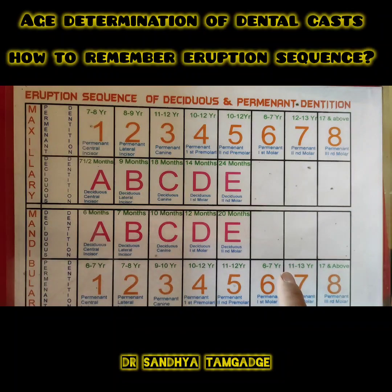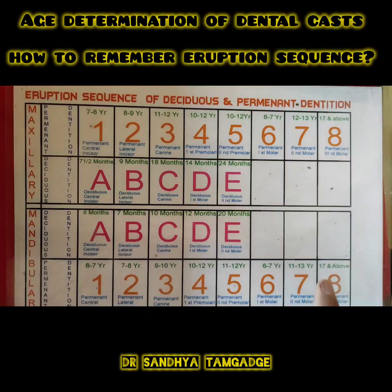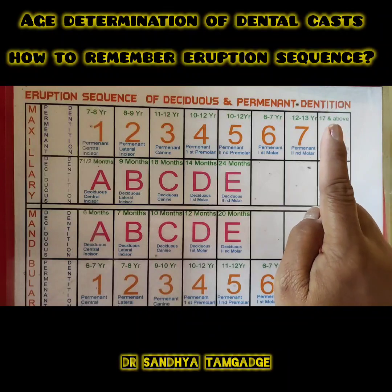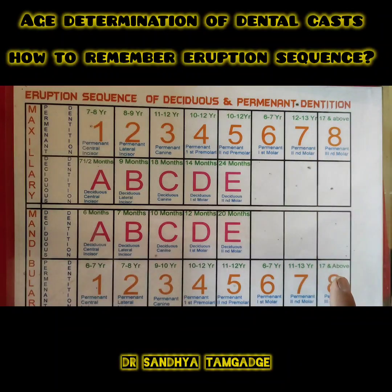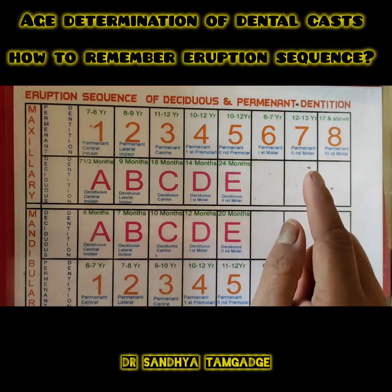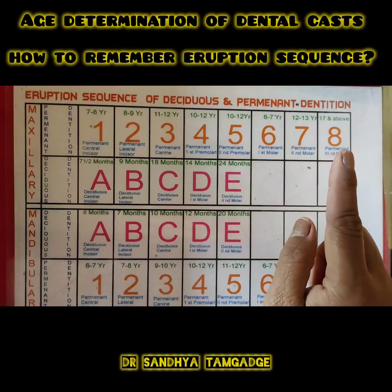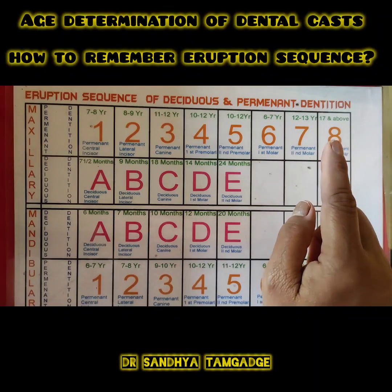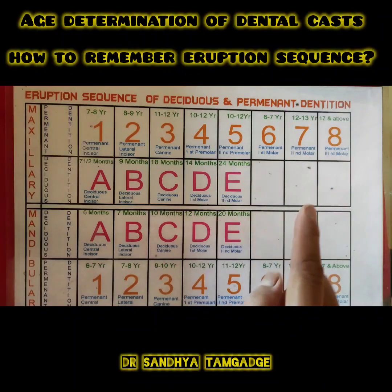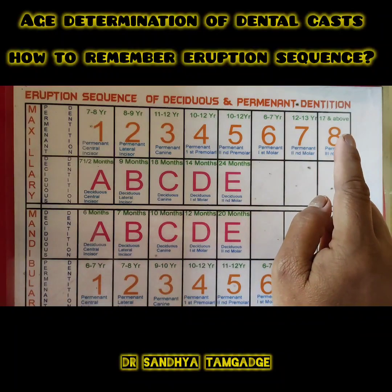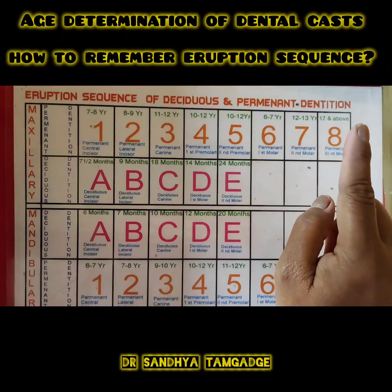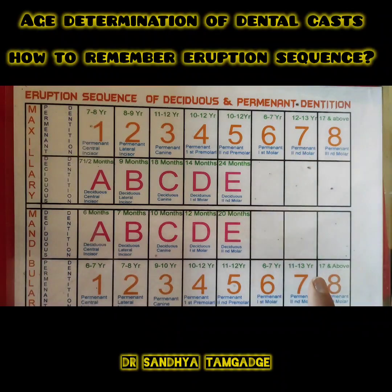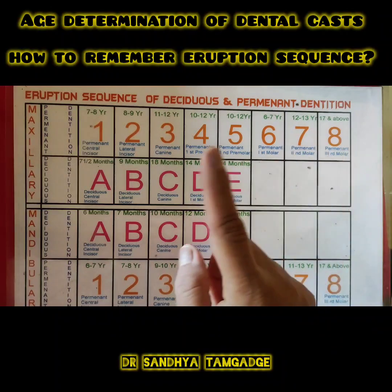The last teeth to erupt are the third molars, always at 17 years and above. Variations can occur and these teeth are frequently absent in the arch. If in your exam cast all other teeth have already erupted and the third molar is erupting, the age of the cast will be 17 and above.